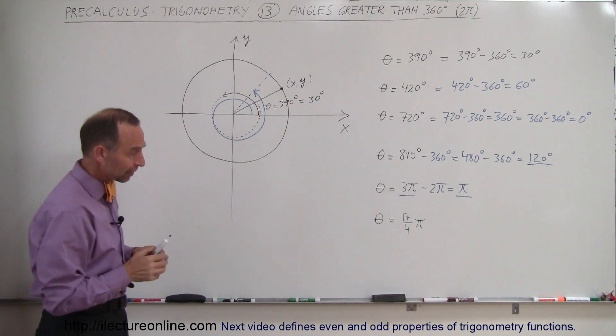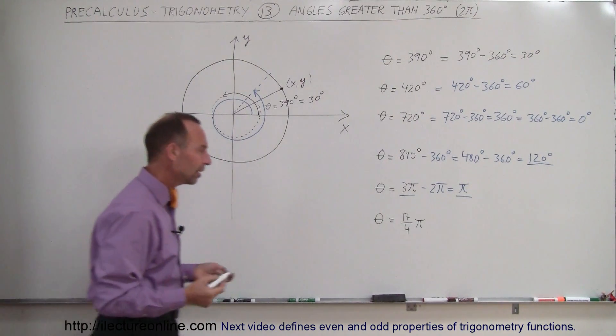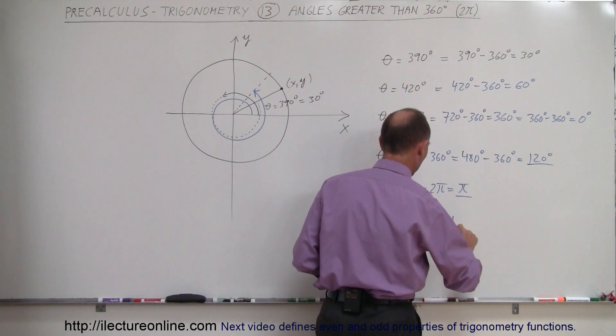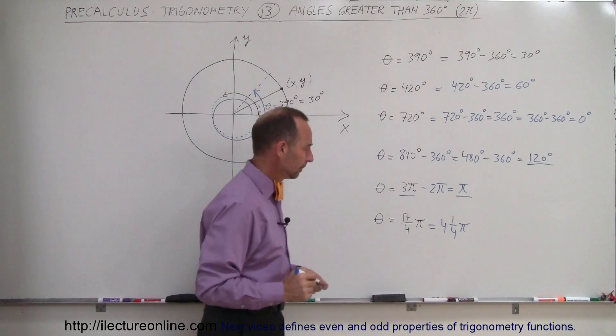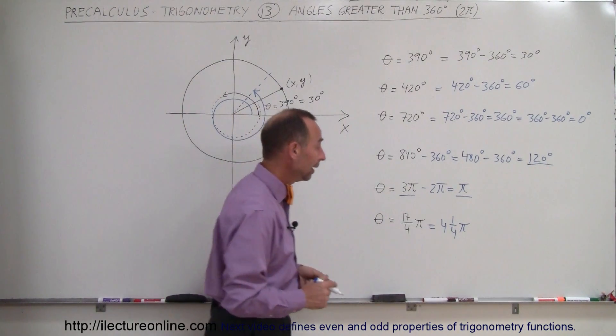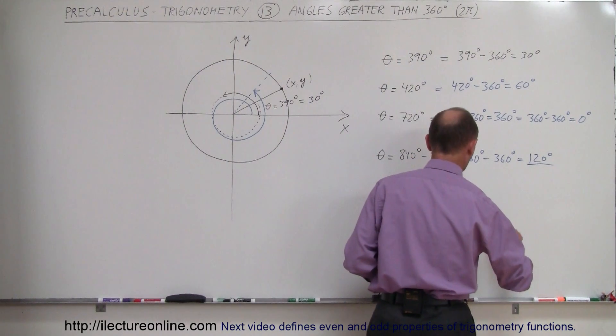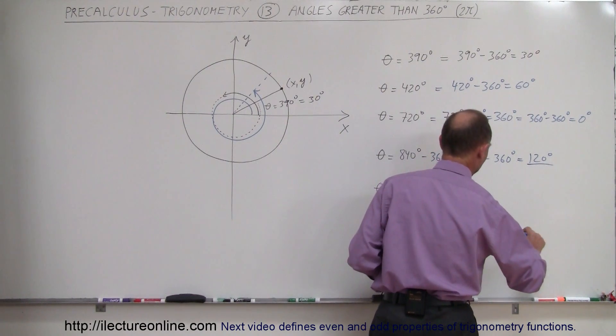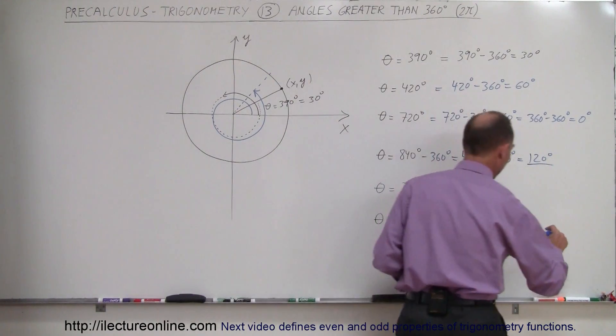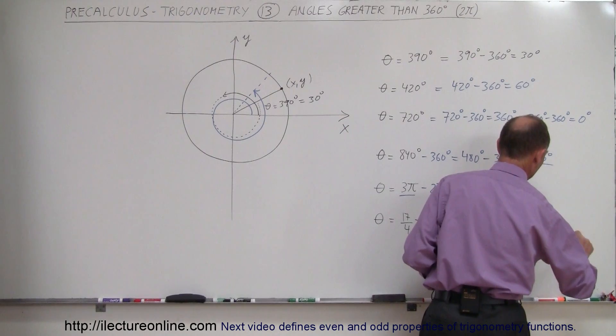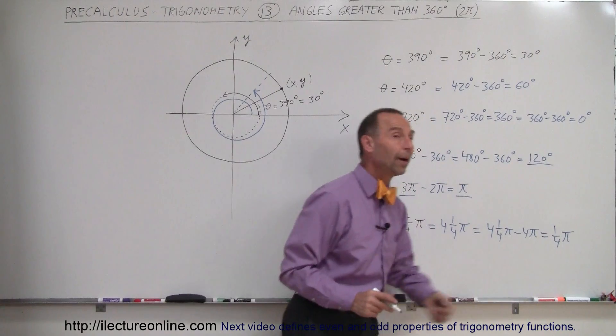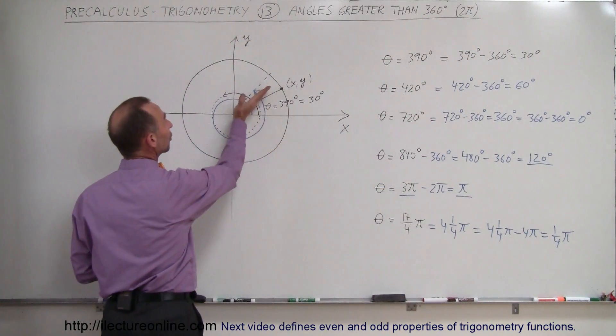And finally, when you have something like 17/4 π, how do you reduce that? How do you simplify that? Well, this can be written as 4 and 1/4 π minus 4π—it's a multiple of 2π—which gives you 1/4 π. And so you can say that 17/4 π is the same as 1/4 π. A quarter π would give you 45 degrees.